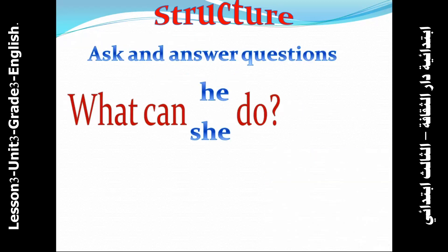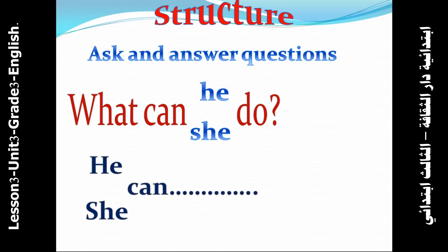Ask and answer questions. How do you ask and answer questions about ability? We use the question word 'What can he or she do?' To answer, you begin with 'He can' or 'She can,' then the thing which he or she can do. For example: What can he do? What can she do? He can or she can do the thing.